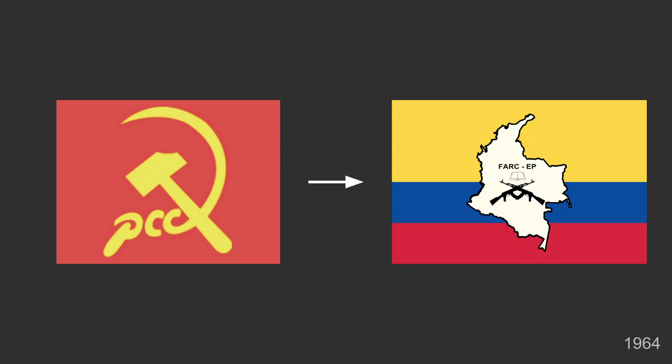Now it is time for recent politics. We start in the not-so-recent time of 1964, when the Colombian Communist Party split and the militant wing formed the FARC. Throughout their history, they have been a militant group that makes money through drug trade and has kidnapped and killed many people for negotiation and ransom.